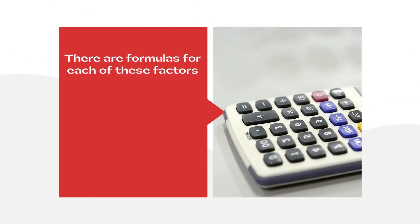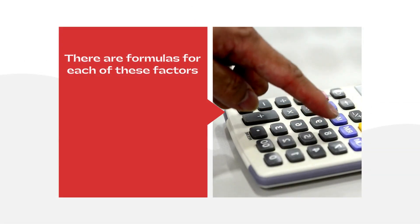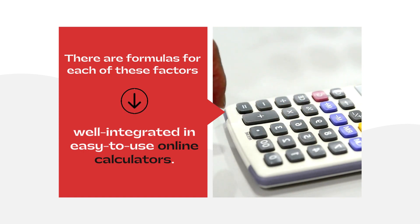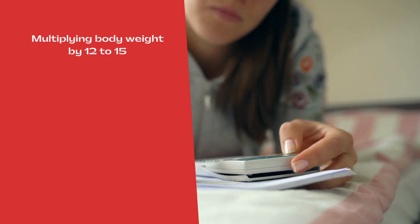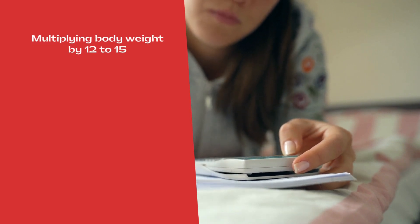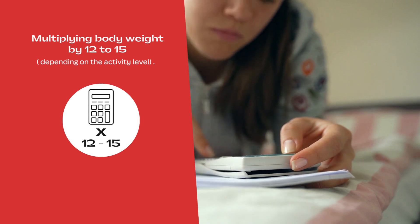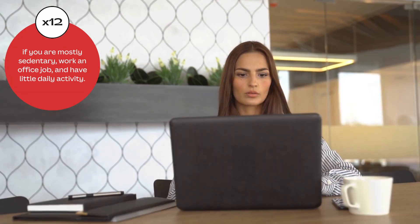There are formulas for each of these factors, which are usually well-integrated in easy-to-use online calculators. However, for the sake of simplicity, multiplying body weight by 12 to 15, depending on the activity level, can also be a viable formula to use.